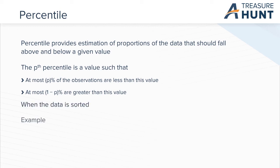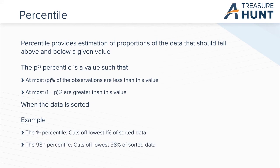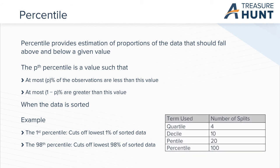Look at the example. The first percentile cuts off the lowest 1% of the sorted data, and the 98th cuts off the lowest 98% of the sorted data. Note the terms used in the chart. Quartile signifies 4 splits in the data. Decile signifies 10 splits. Pentile is 20 splits. And percentile is 100 splits of the data.